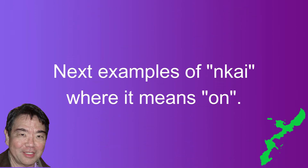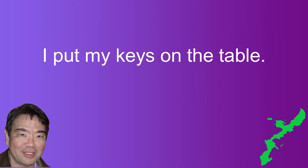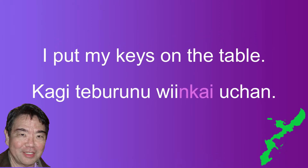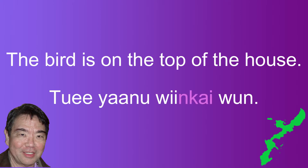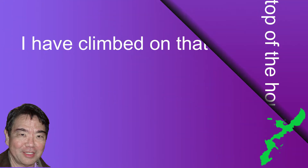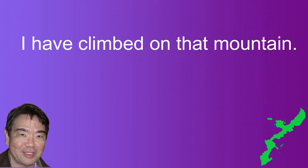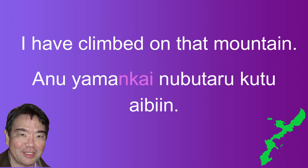Next, we'll look at some examples where unkai is used to mean 'on.' I put my keys on the table: Kagi te buru nu uing kai uchang. The bird is on top of the house: Tue ya nu uing kai un. I have climbed on that mountain: Anu yaman kai nubutaru kutu aibing.